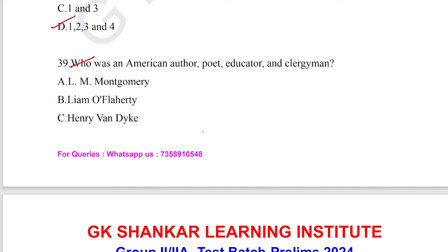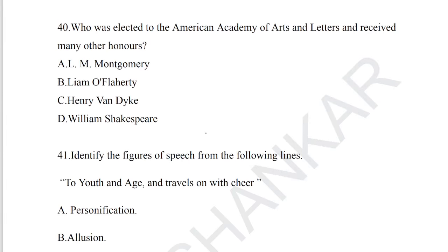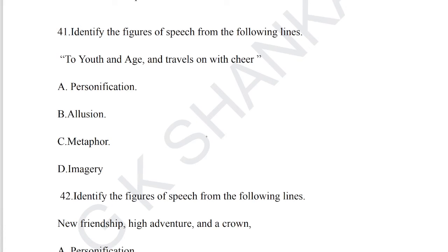Question number 39: who was an American author, poet, educator, and clergyman? The answer is Henry Van Dyke — Henry Van Dyke was specifically a clergyman, related to religion, particularly Christianity. Question number 40: who was elected to the American Academy of Arts and Letters and received many honors? Option C — Henry Van Dyke — is the answer for question number 40.